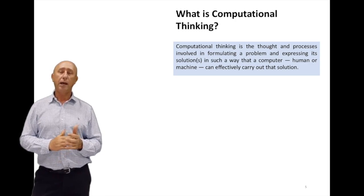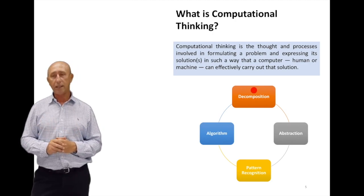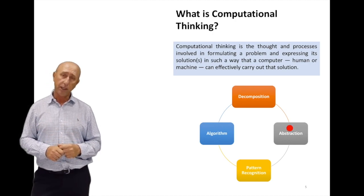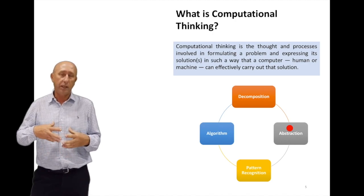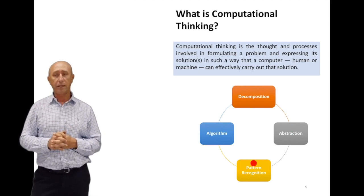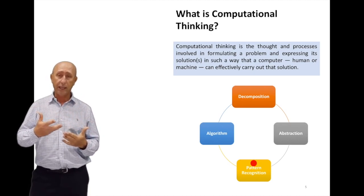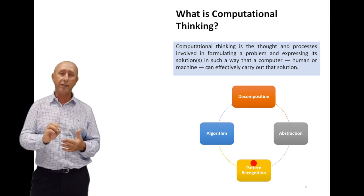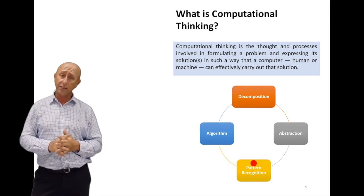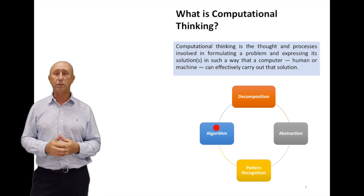Now computational thinking itself is composed into different parts. The first part is decomposition. You need to understand the problem and break it down. The second part is abstraction. Abstraction is that you're given information and you need to focus on the main information. The third part is pattern recognition. Pattern recognition is that in general, in life, there are patterns that exist within a problem, and you're trying to identify these patterns so they can help you solve the problem. The last part is finding the solution to these problems, and that is called algorithms.